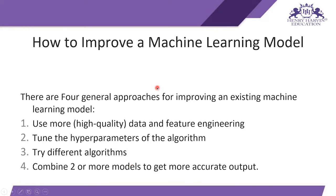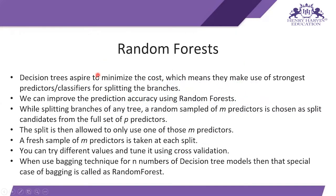Random Forest and decision trees aspire to minimize cost, which means they use the strongest parameter classifiers for splitting the branches. We can improve the prediction accuracy using Random Forest. The decision tree's main motive is to minimize cost using the strongest predictors to split branches effectively, and to increase prediction accuracy we can use Random Forest.